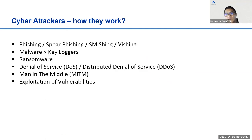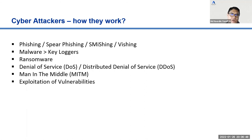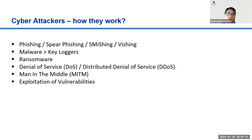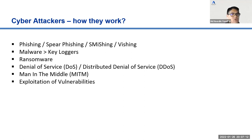Cyber attackers use many techniques: phishing, spear phishing, smishing, and vishing. The technique used in the OCBC scam is smishing — phishing via SMS. Victims receive an SMS, click the link, and are brought to a website where they fill in confidential information. There is also malware — malicious software. When you click a phishing link, you can download a keylogger that records every key you type.